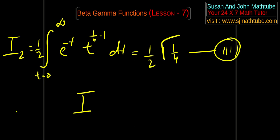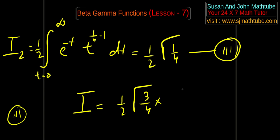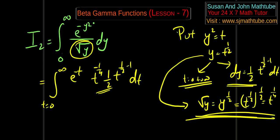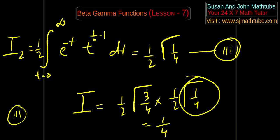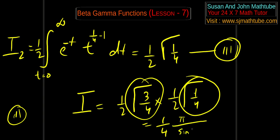Plugging equations 2 and 3 into equation 1: I = (1/2)γ(3/4) · (1/2)γ(1/4) = (1/4) · γ(1/4) · γ(3/4). The sum is 1, so this equals (1/4) · π / sin(π/4) = (1/4) · π / (1/√2) = π/(4/√2) = π/(2√2).